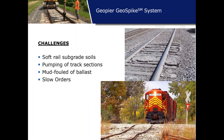Those of us that work in the rail industry know what we see on the right hand side is a common problem. Much of the rail infrastructure is in poor repair. We have soft subgrade soils that are causing fouled ballast, mud fouled ballast, pumping track sections. These things can lead to instability of the track line and ultimately, as seen in the lower right hand corner, can eventually lead to a slow order for the train.